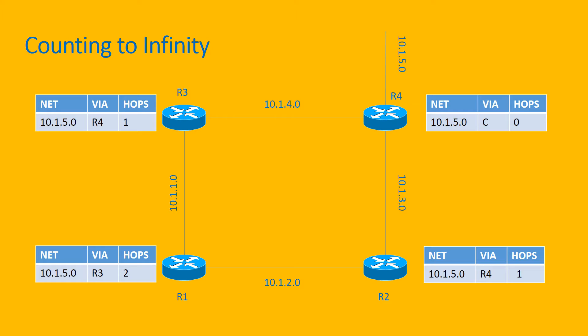Let's analyze together. As you can see in this network diagram, all the routers learned about the route 10.1.5.0. Now all of a sudden the network 10.1.5.0 went offline. Router 4 will mark that route as unreachable and send the updates to Router 3 and Router 2. Router 3 and Router 2 will mark the route for network 10.1.5.0 as unreachable.